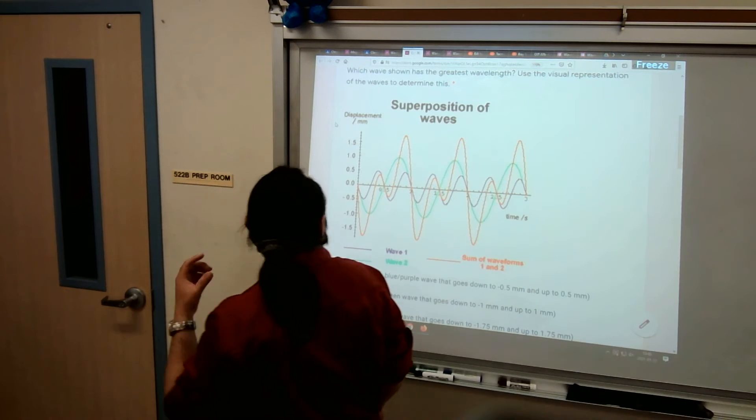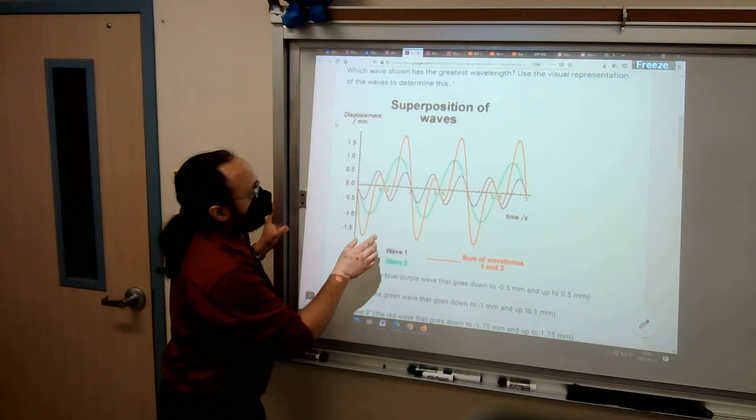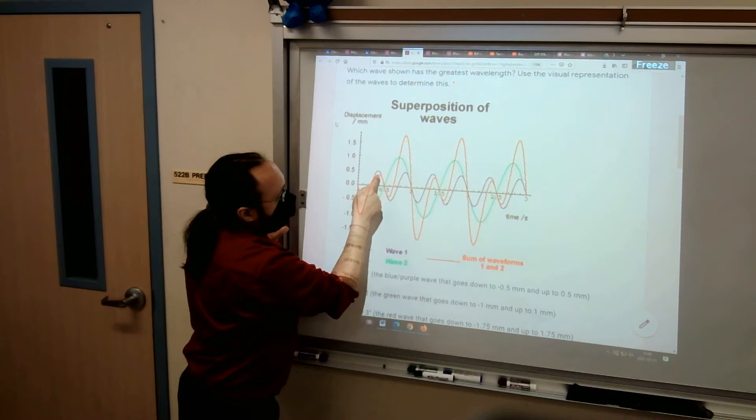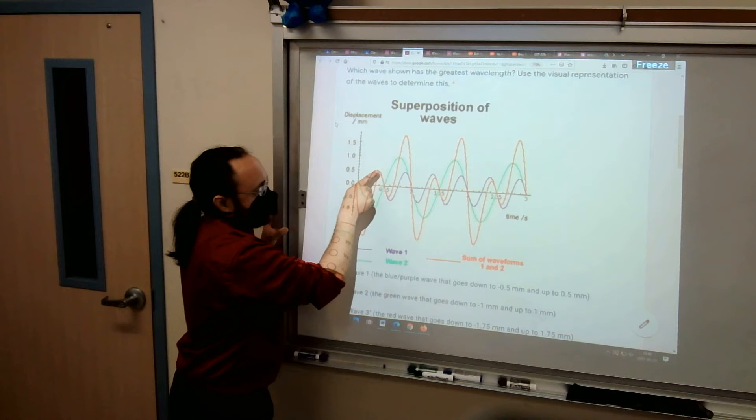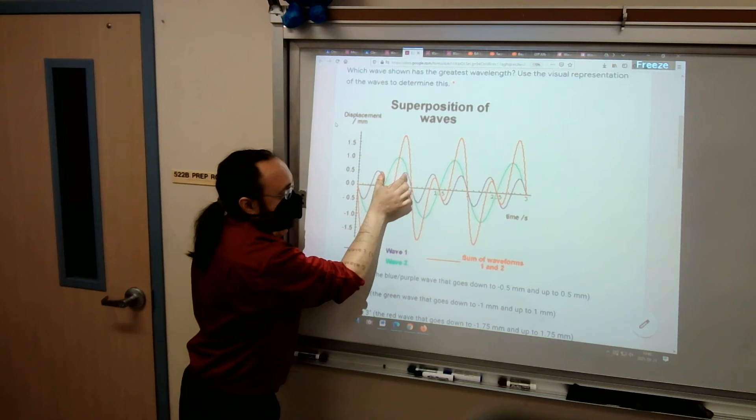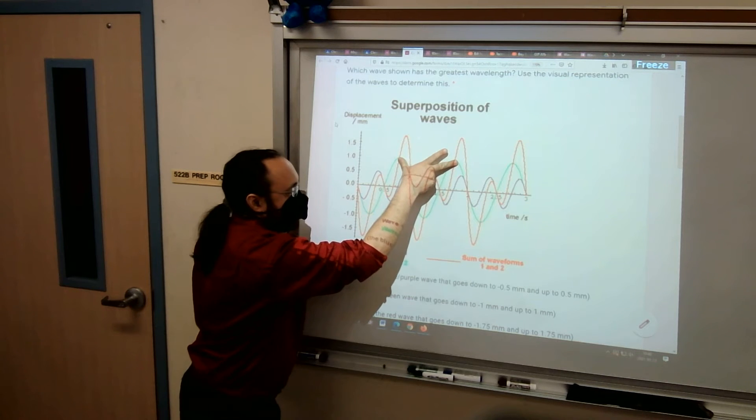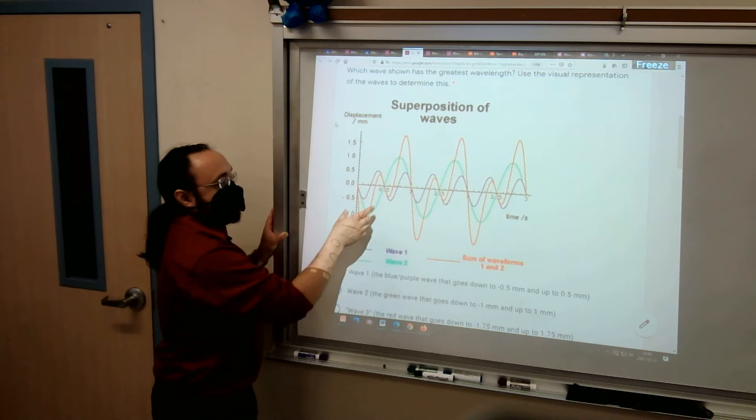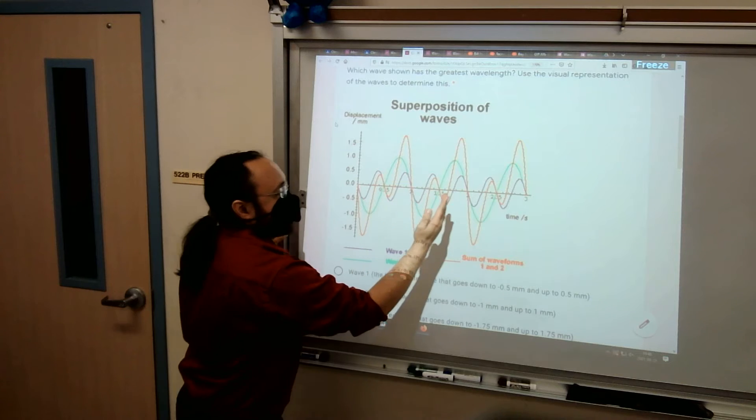Okay, so like I was saying, the red one has the shortest wavelength measured between consecutive crests, which is the high point here. The blue one has the next longest wavelength, it's just a little longer than the red one's. The green one has the longest wavelength.